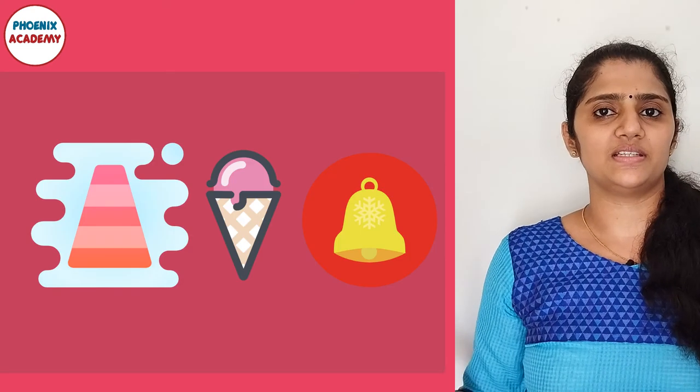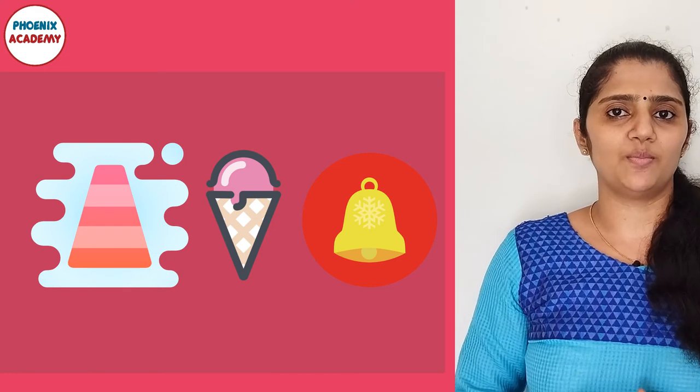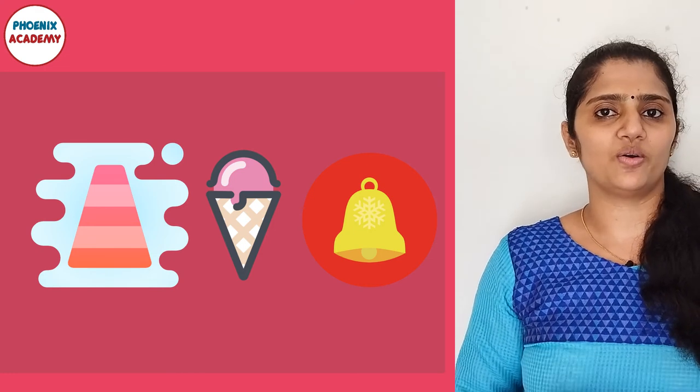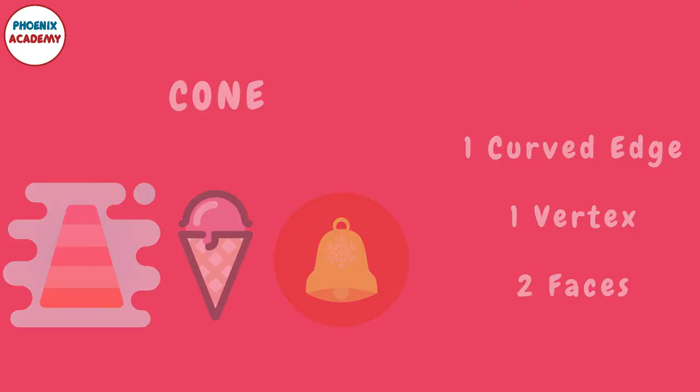Look at these objects. All these objects have the shape of a cone. A cone has one vertex. It has one curved edge and two faces: one curved face and one flat face.